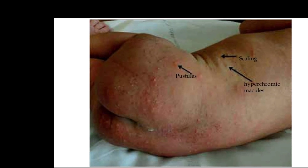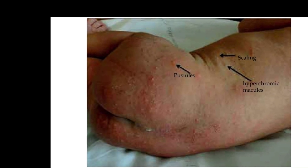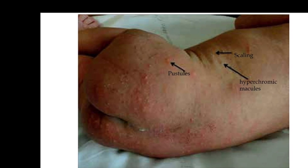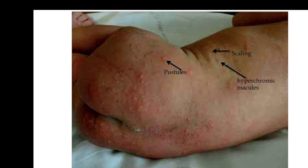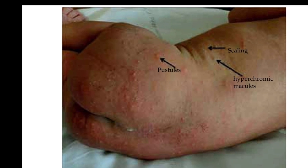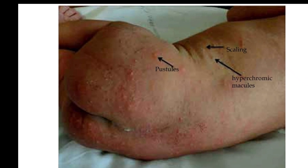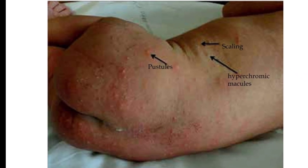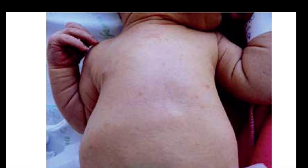What are the differential diagnoses of neonatal pustulosis and how to differentiate between them? The first is transient neonatal pustular melanosis, the second is erythema toxicum neonatorum, and the third is neonatal cephalic pustulosis. How to differentiate between them? By onset, course, duration, clinical manifestation, and histopathology.